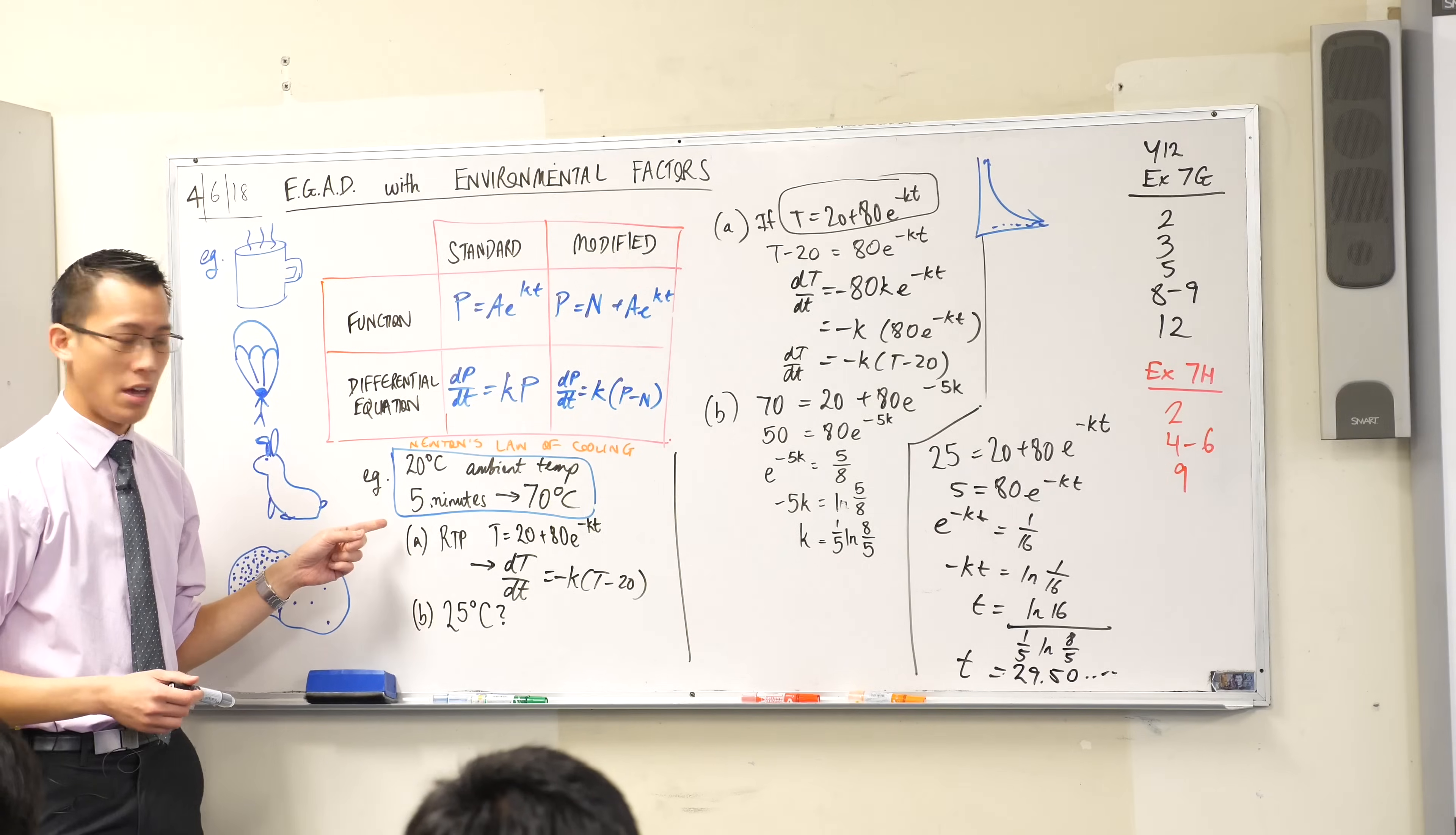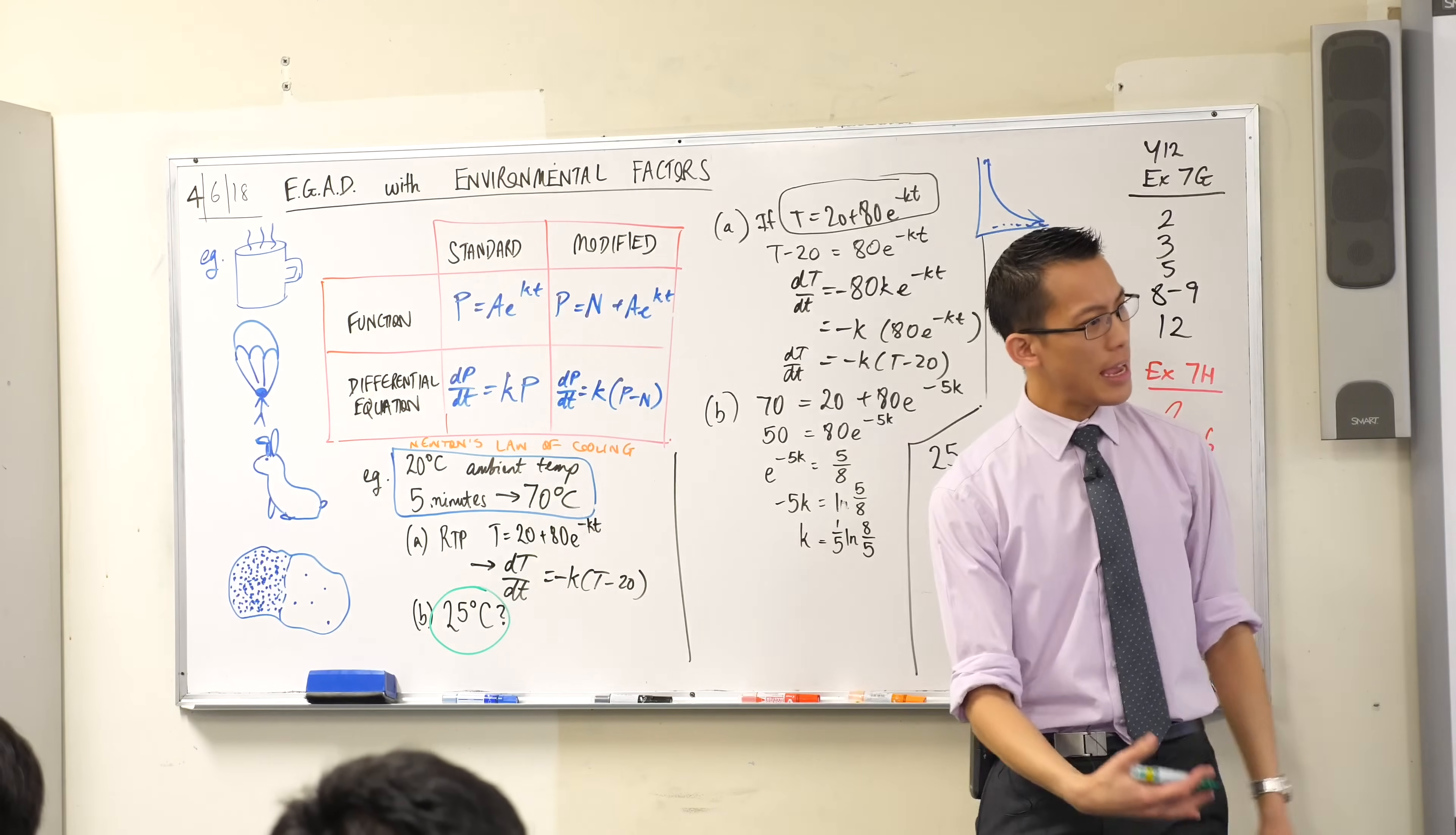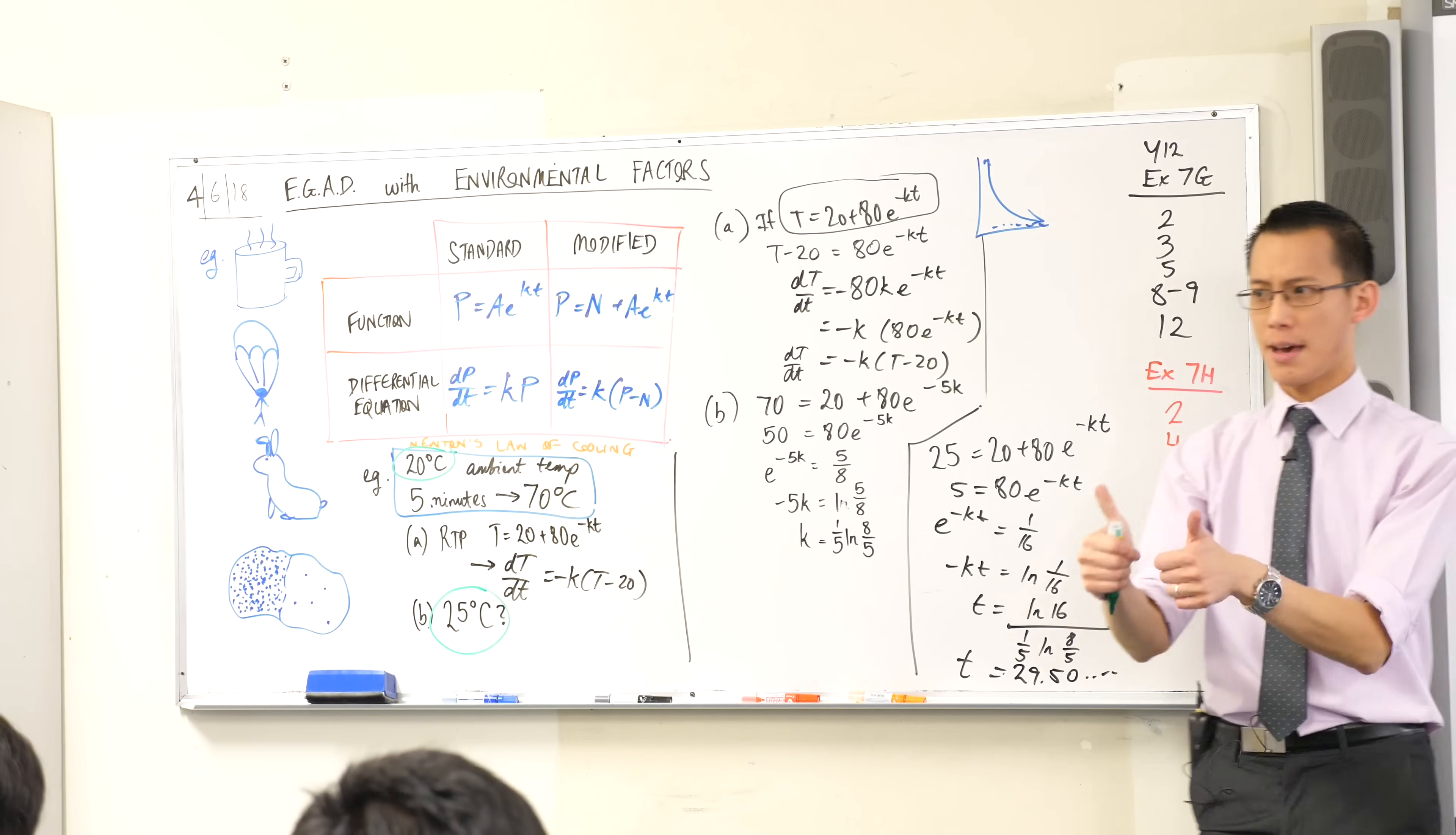Does that seem reasonable? It took 5 minutes to drop 30 degrees in temperature. I'm trying to drop another 45 degrees. Does it stand to reason that it takes almost half an hour for that to happen? And I think it does because think about this, right? You always got to do a sense check, right? 25 degrees. Is that close or far from our ambient temperature? Close or far? I'd say it's pretty close, right? And the closer you get to your ambient temperature, or ambient whatever, the slower it goes. That's the way exponential decay goes. It slows right down. So it's going to take a long time to move those last few degrees. Does that make sense?